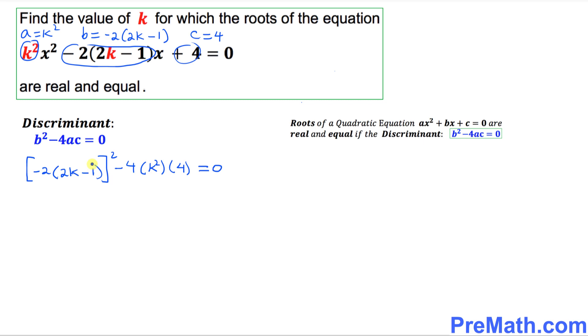Let's take care of this square. We have -2 squared become positive 4 times (2k-1)² minus that's going to give you 16k² = 0. And you can see that all these terms are divisible by 4. Let me divide it by 4 across the board.